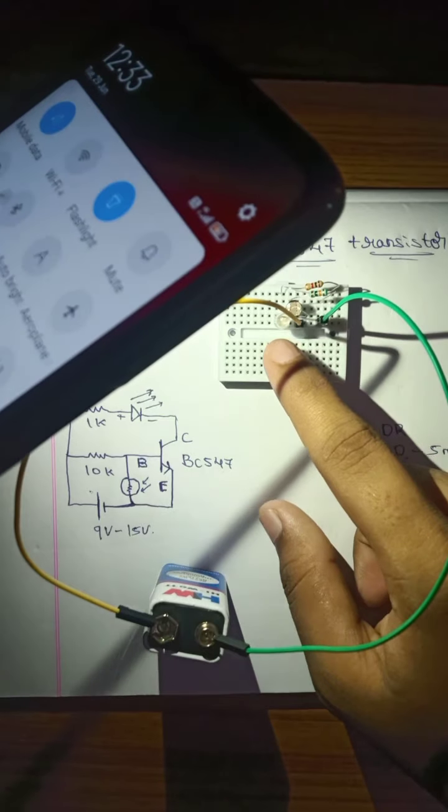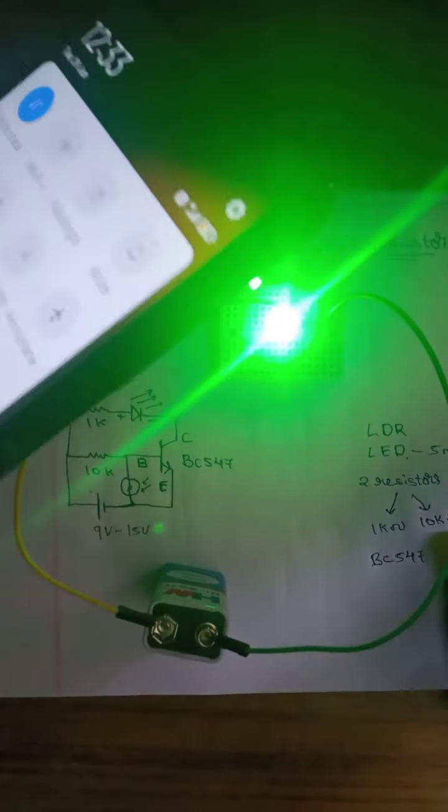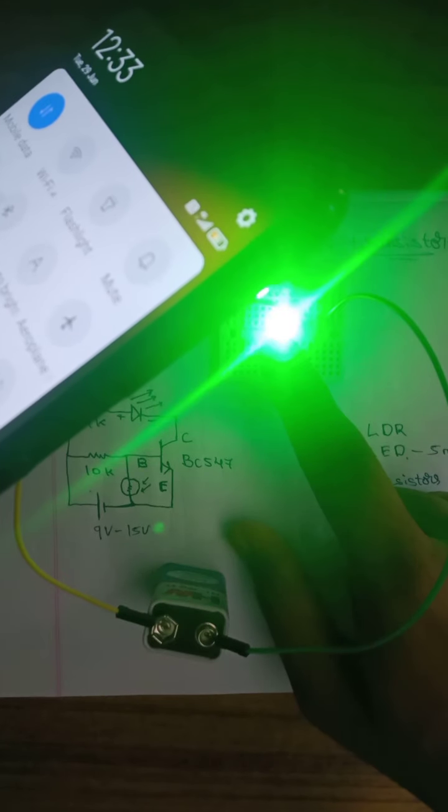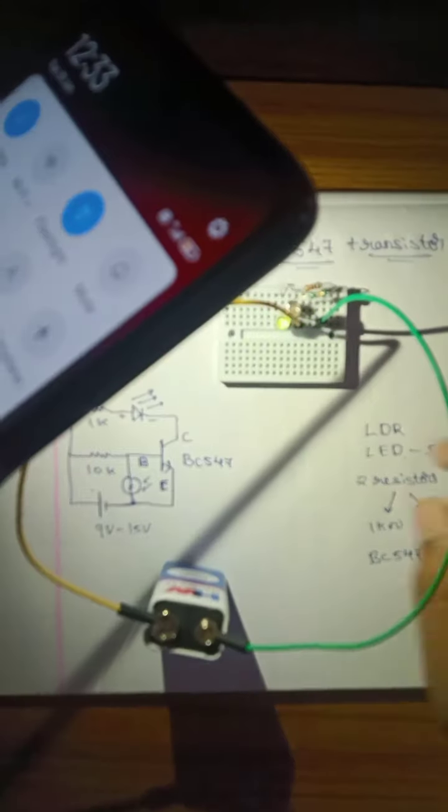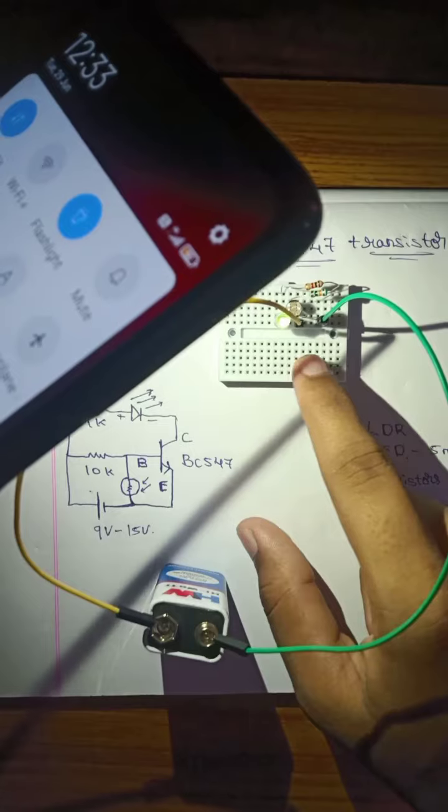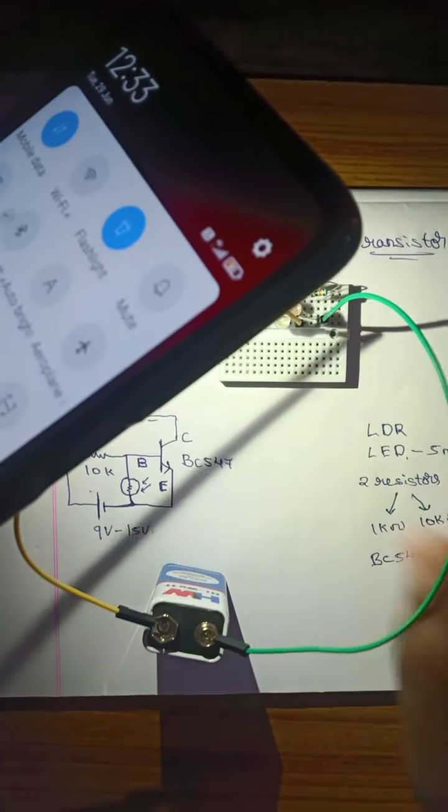We observe that when we flash the light on the LDR, the LED does not glow. When we remove the flashlight, the LED glows. This is the output or the observation of this activity.